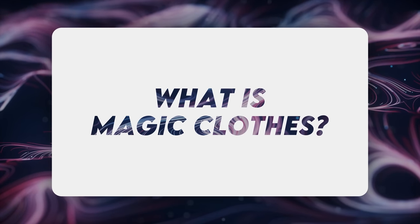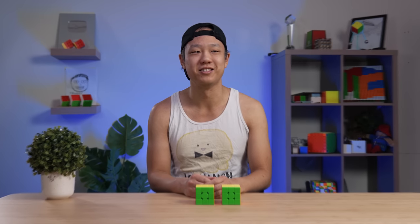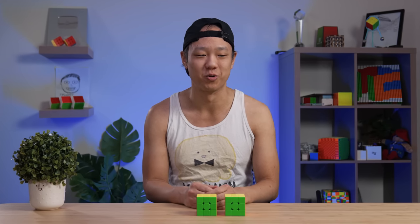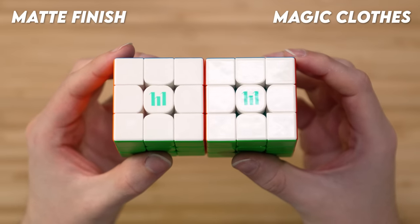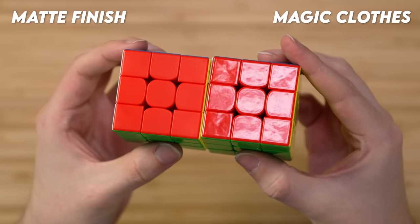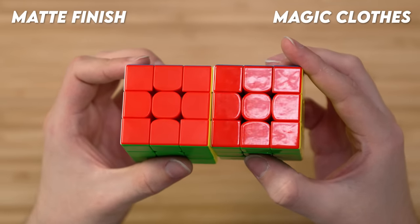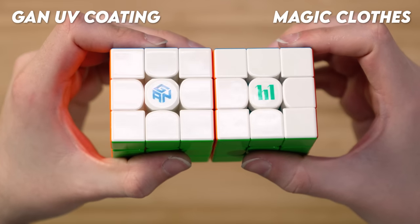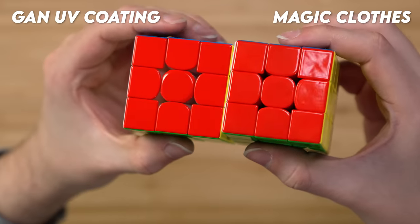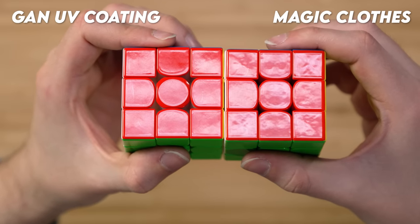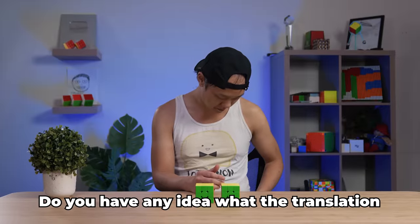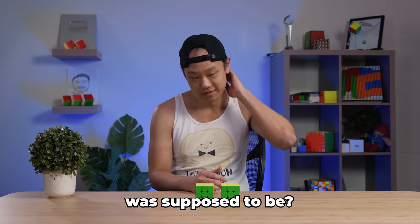One important thing people ask is, what the heck is Magic Clothes? And not grammatically correct, but also grammatically correct at the same time, what is Magic Clothes? So Magic Clothes is a technology where they make the outer surface of the puzzle glossy, similar to GAN's UV coating. In fact, the finish is pretty much the same. It's scratch resistant. It reflects light, and it's very shiny, and it's great for grip. Do you have any idea what the translation was supposed to be? No.